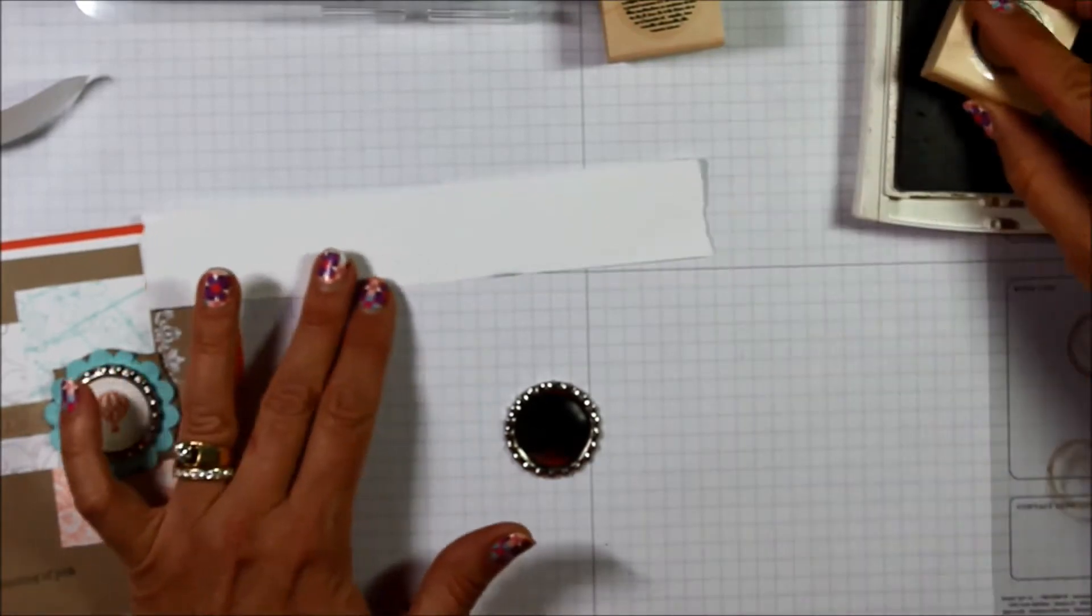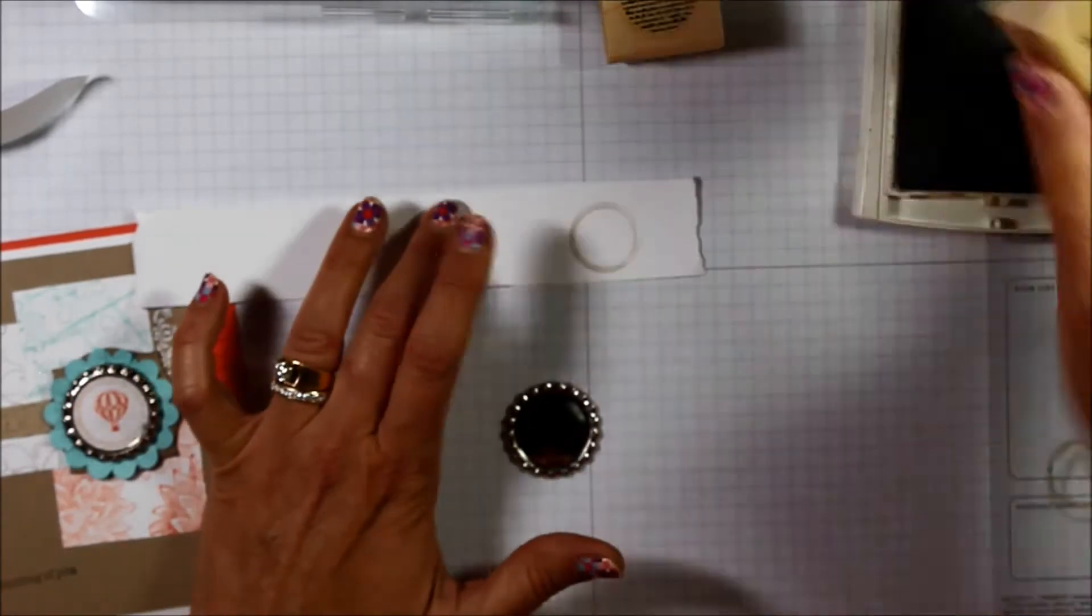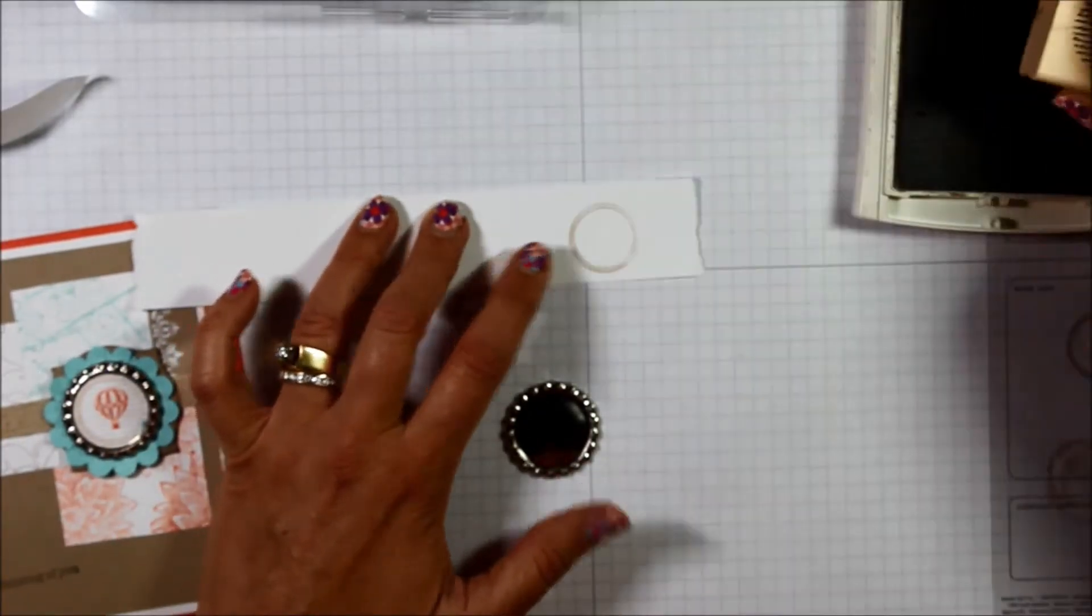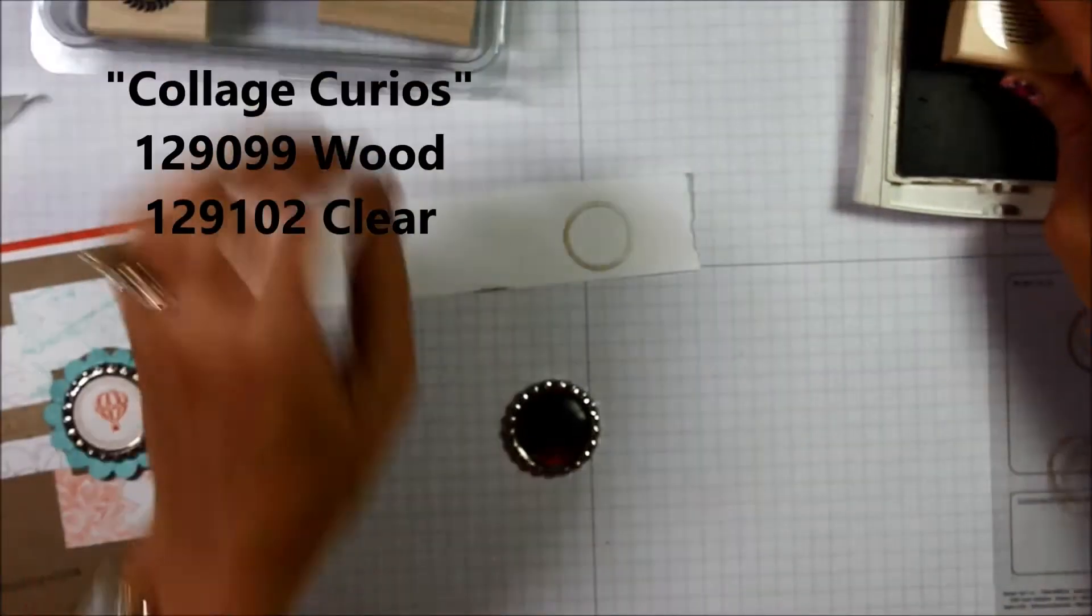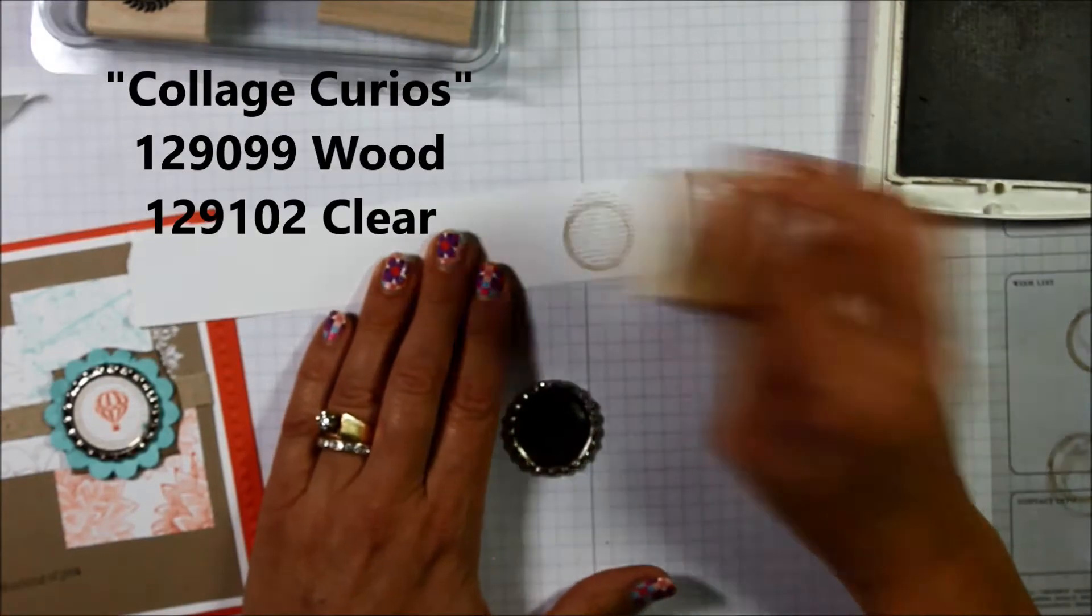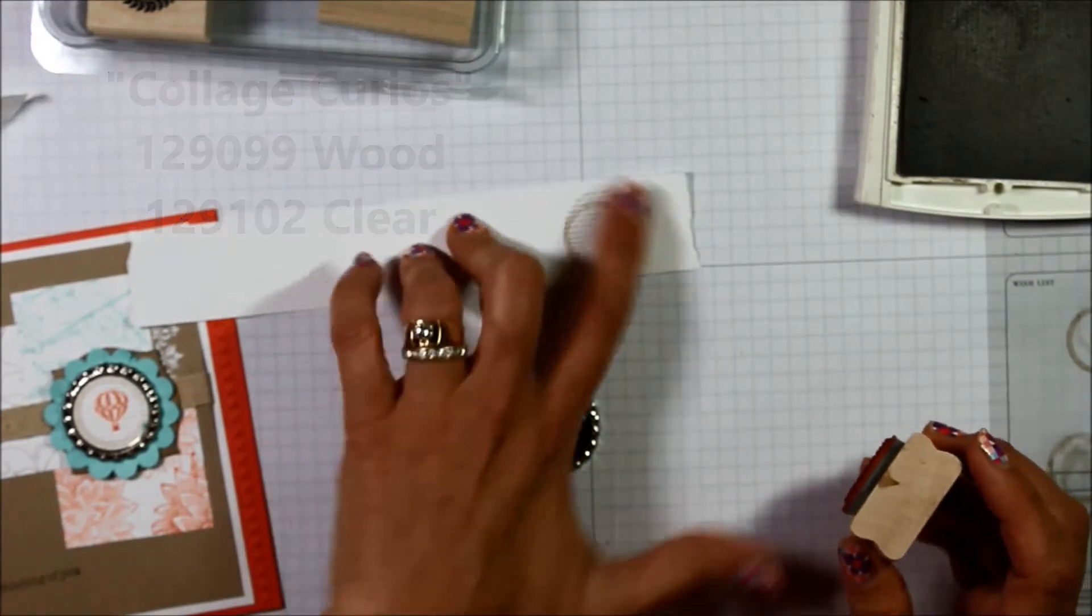Now let's get the middle decorated. All right, I've got my Crumb Cake ink and we're going to work on getting that middle image built. I've used the outline stamp. This is Collage Curios stamp set. And we're going to now go over the top with that. Now don't worry about getting outlined.